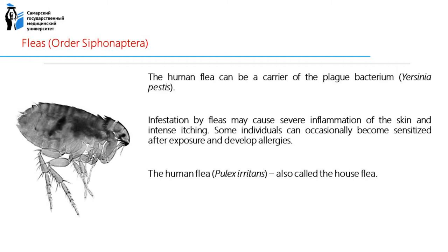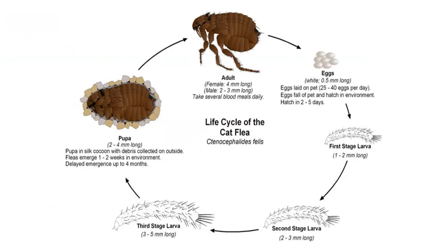Fleas are small wingless insects with a tough cuticle bearing many bristles and frequently combs of broad flattened spines. The human flea, Pulex irritans, also called the house flea, has a four-part life cycle: eggs, larvae, pupa, and adults. Eggs are shed by the female in the environment and hatch into larvae in about three to four days. Larvae feed on organic debris in the environment and eventually form pupae in cocoons often covered with debris such as sand and pebbles. The larval and pupal stages are completed in about three to four weeks.